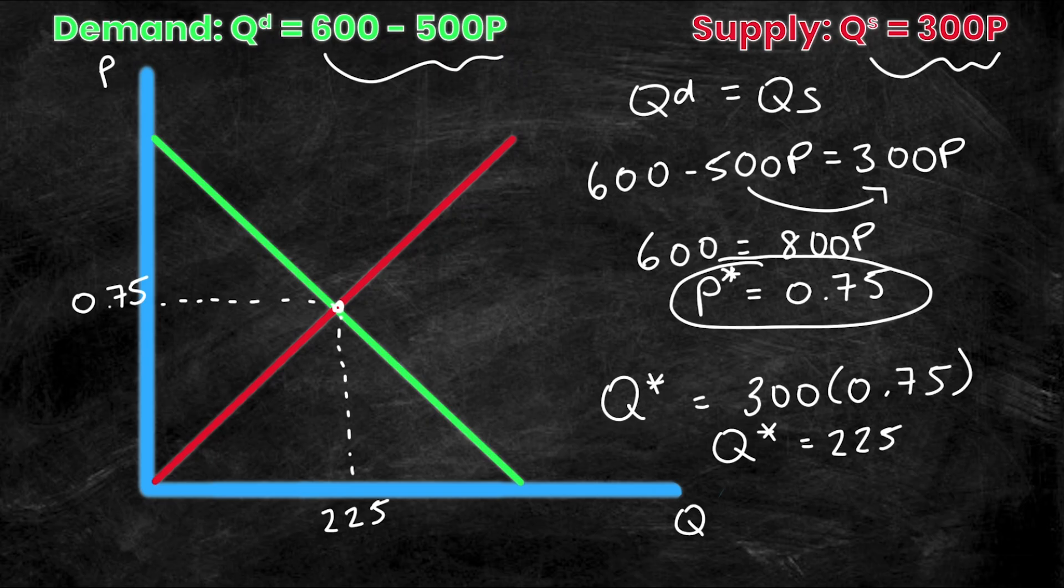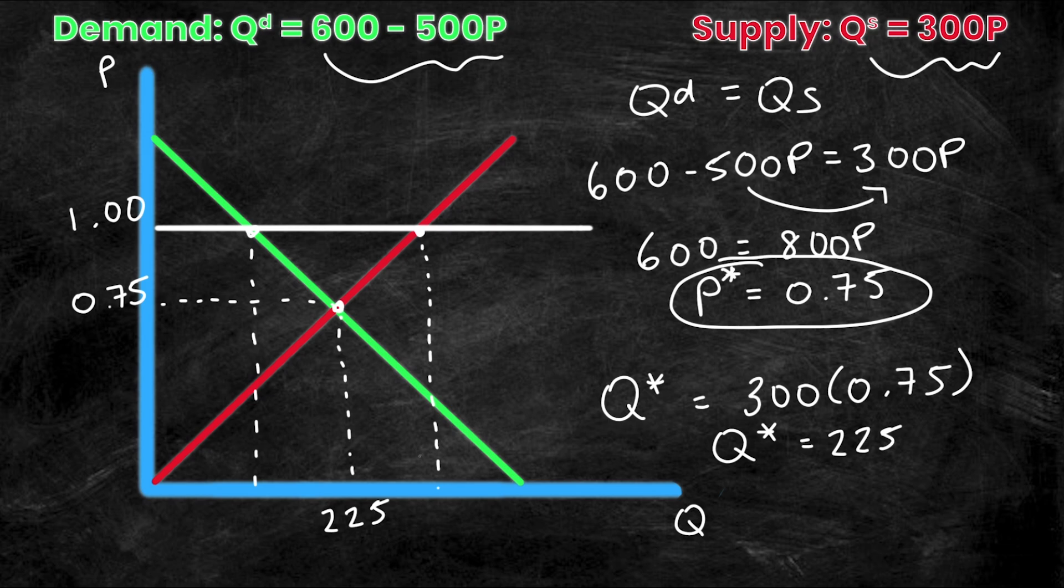We'll start by looking at a surplus. Let's say that for some reason, instead of being 0.75, the price was actually set at approximately $1. So we'll have this line right here represent the new price, and it'll be at $1.00 or $1. Well, now we don't have an equilibrium point, but we actually have two different intersection points right here, where the new price intersects the demand curve. And over here as well, where the new price intersects the supply curve. And these are not at equilibrium. So how do we calculate these two quantities?